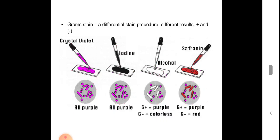In another picture showing the gram staining procedure: crystal violet is applied, then iodine, then alcohol for decolorization, then staining with safranin. If gram-positive, the bacteria will be seen in purple color. If gram-negative, the bacteria will be seen in red or pinkish color.